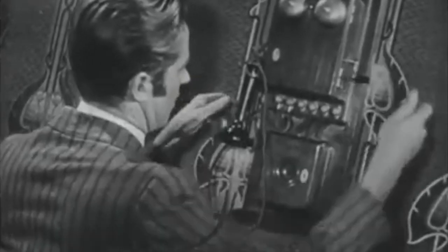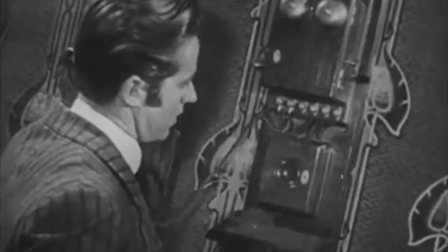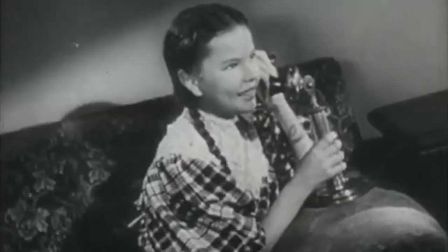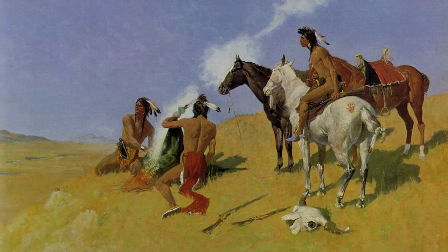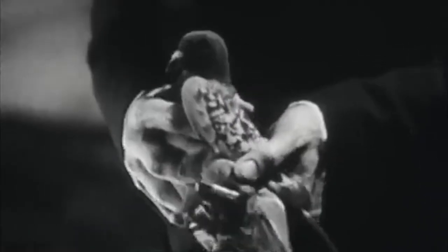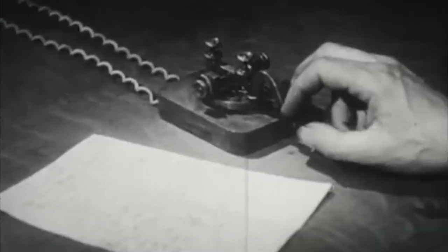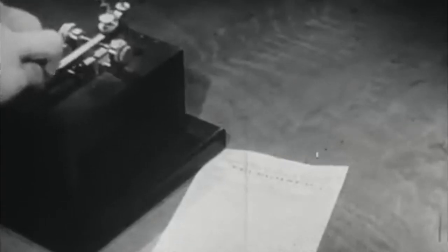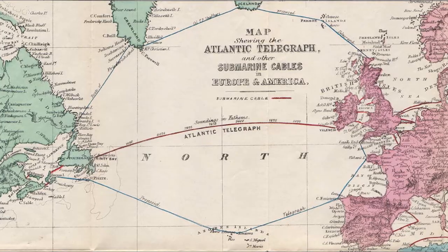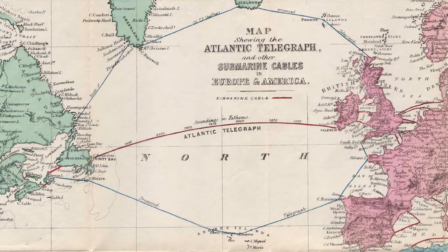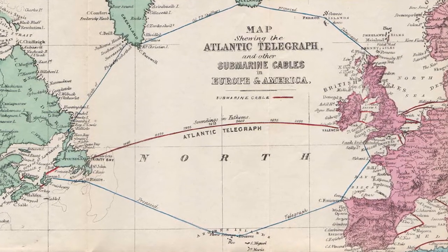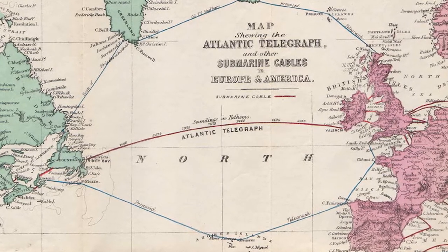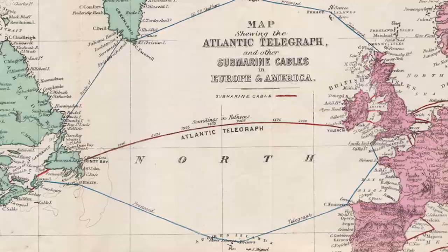If you watched our History of Wireless Transmission video, you may remember that forms of communication existed before the telephone, such as smoke signals, messenger pigeons, and the telegraph. The telegraph allowed people to electronically transmit messages over long distances with the use of Morse code, as well as demonstrating that communication over two different continents was possible when the transatlantic cable was laid between England and America over the Atlantic Ocean.